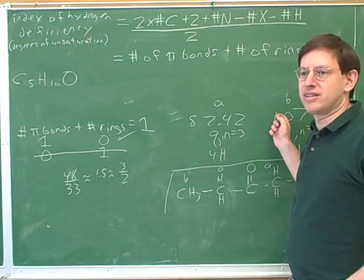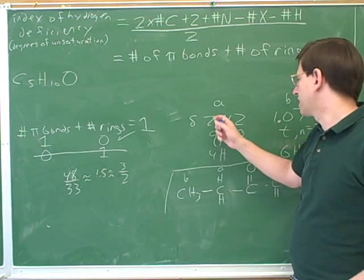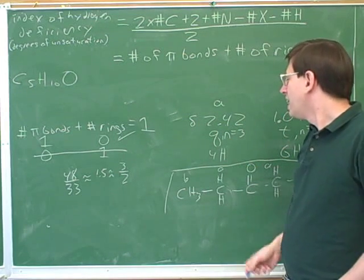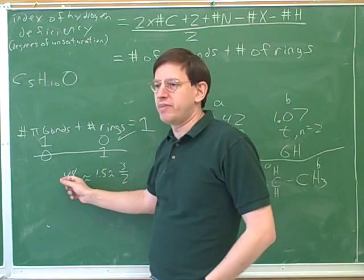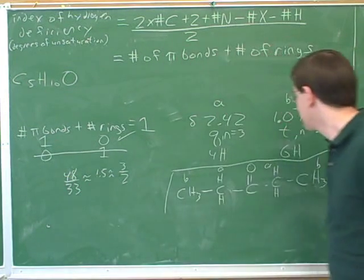Then summarize the data like this. This is good notation for summarizing the data: chemical shift, multiplicity, and then notice how we figured out the number of hydrogens from the integration. We have to do a little math here with the integrals to figure out the number of hydrogens.